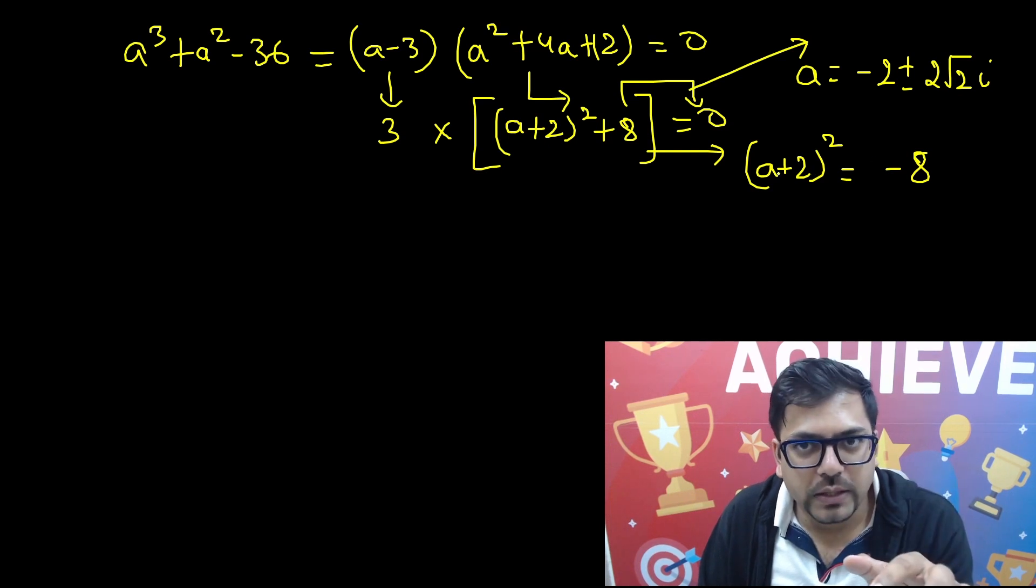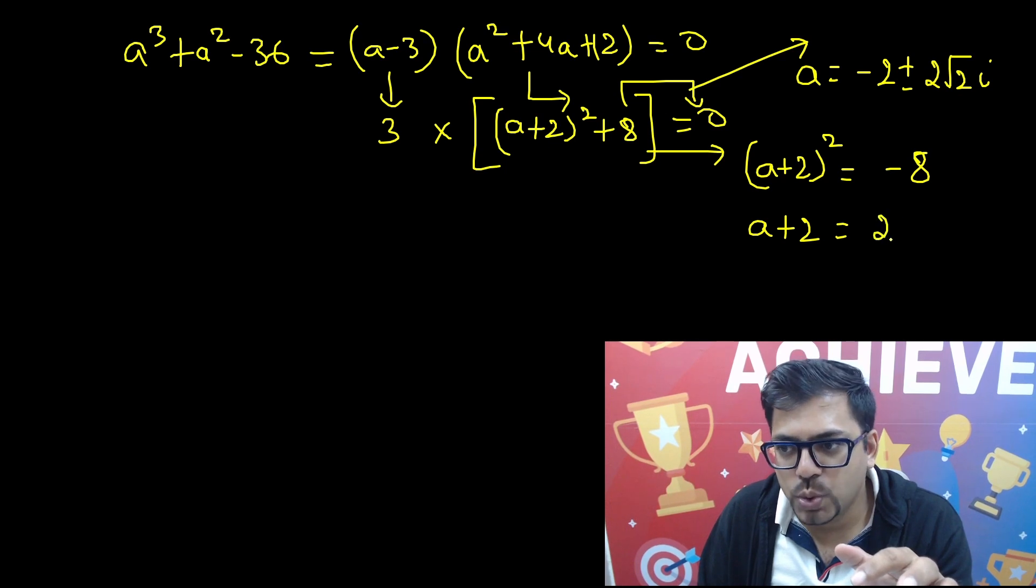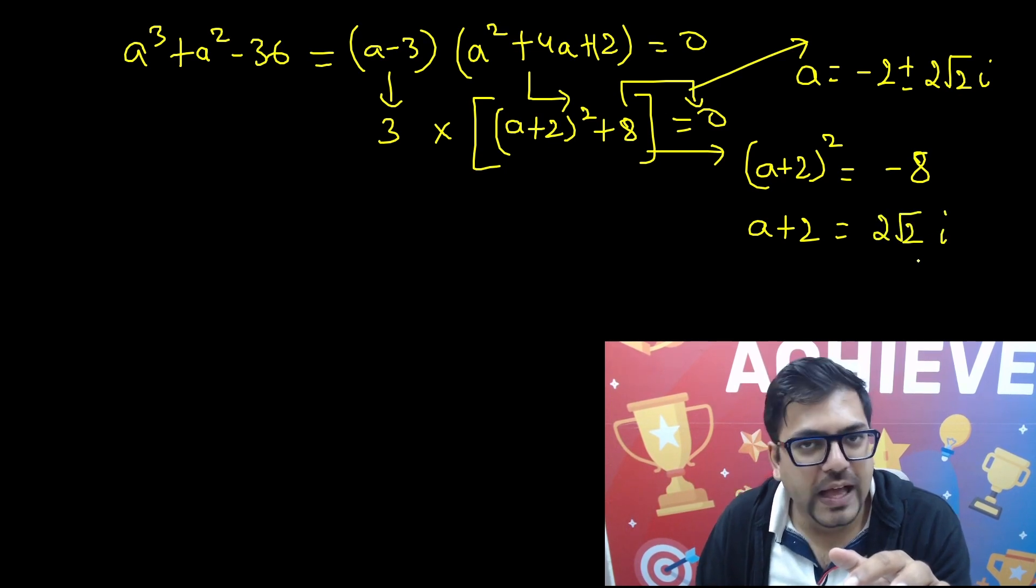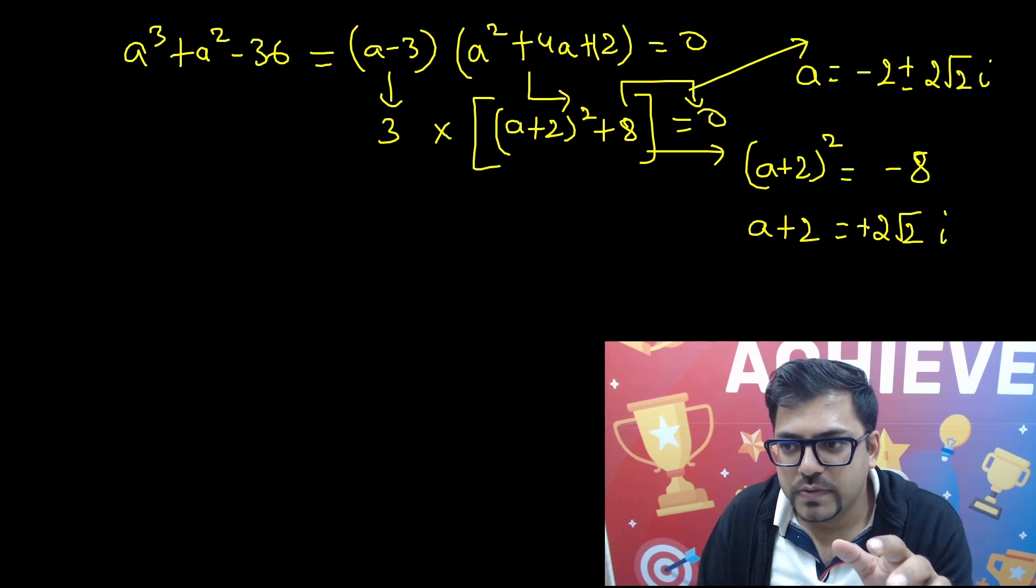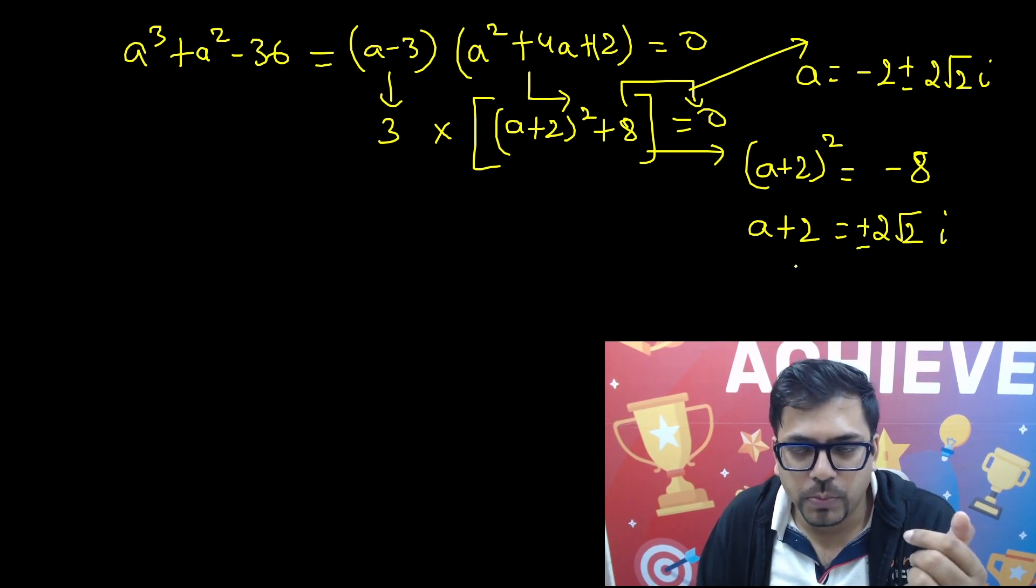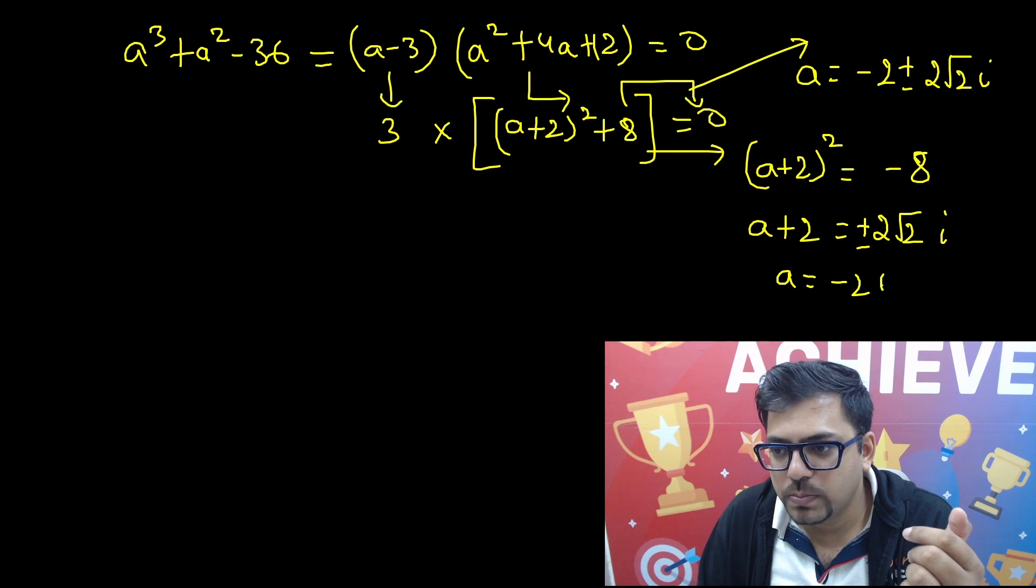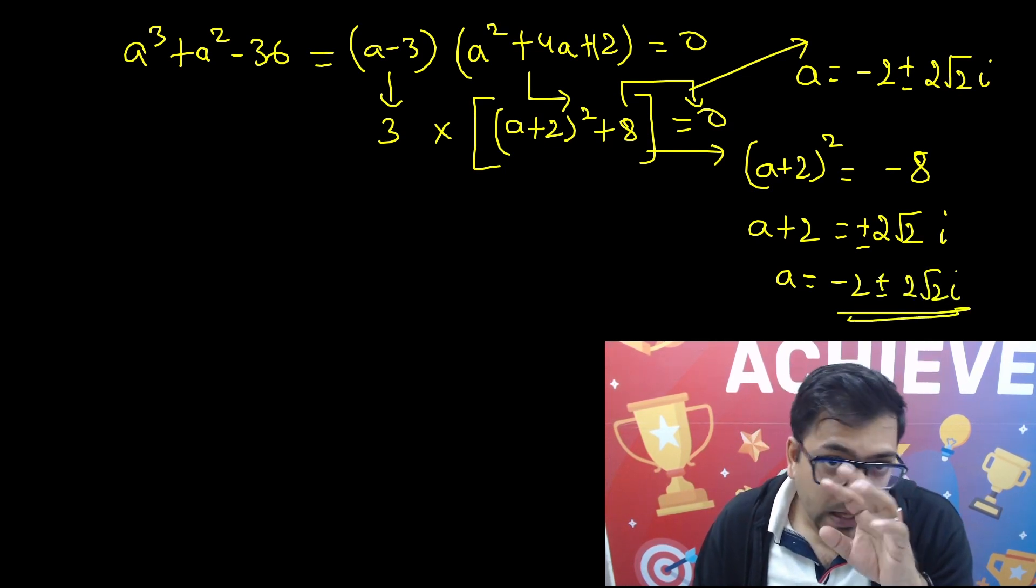You have to take under root both sides so that you can remove the square. a + 2 equals under root 8 is 2√2, and since it's negative we'll have an iota. Now this 2 goes to that side, so minus 2, and this will have a plus minus because we are putting an under root. So a = -2 ± 2√2i.